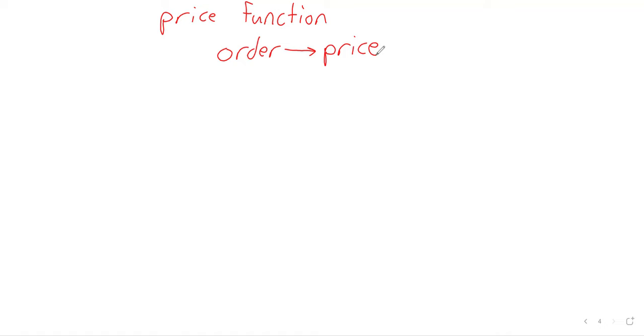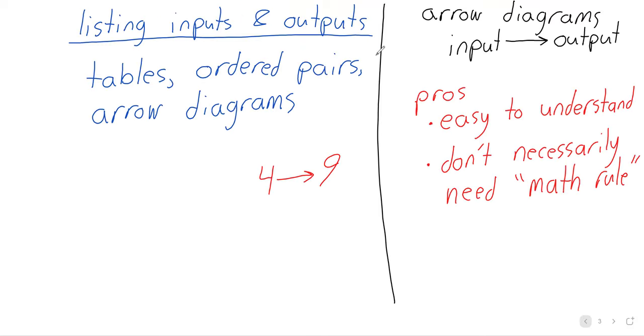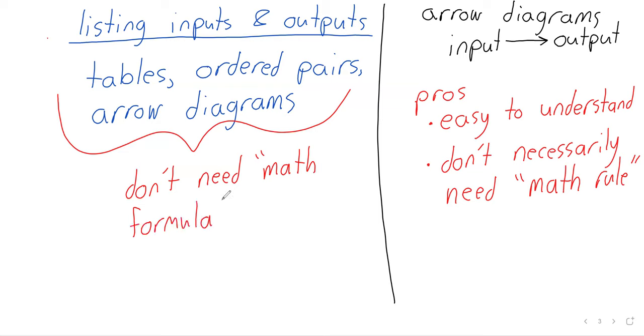This is not a formula. You can't take the square root of the pasta to get your price. A lot of the very standard ways of representing functions only work when your inputs are numbers and you have equations. In all three of these cases, one of the big pros is going to be that we don't need a mathematical formula.